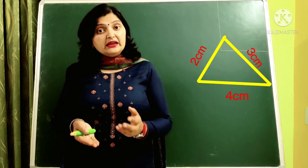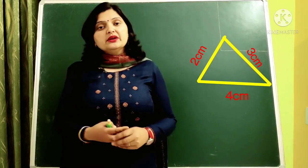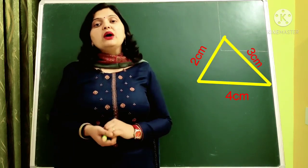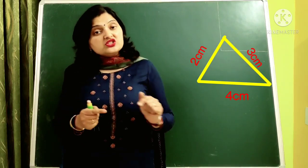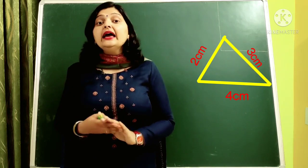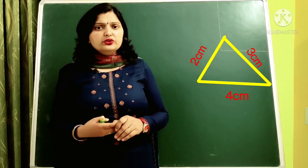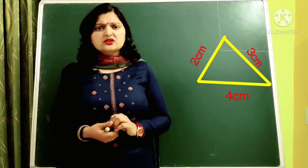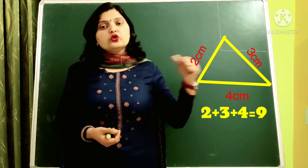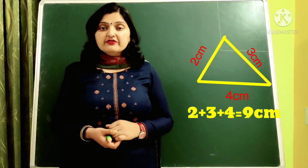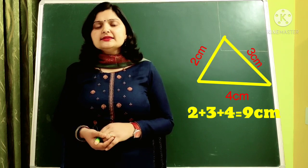We know what perimeter means — to measure the boundary of a figure — so we have to measure the boundary of this triangle. The sides given are 2, 3, and 4 cm. Let us add them: 2 plus 3 plus 4. 2 plus 3 is 5, and 5 plus 4 is 9. So the perimeter of this triangle is 9 cm.